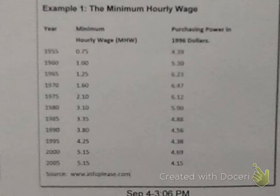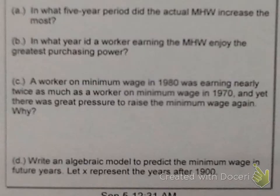The first example is a chart of the minimum hourly wage. They go in five-year increments from 1955 to 2005. The first column is your minimum hourly wage — minimum wage as we call it today. Then they take that number and compare it to what its purchasing power would be in 1996 value. The first question asks: in what five-year period did the actual minimum hourly wage increase the most?